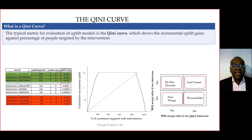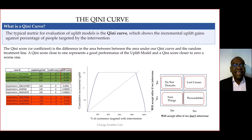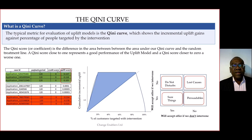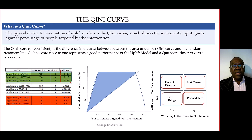The Qini curve can be summarized in a Qini score or coefficient, which is the difference in area between the straight line — the random treatment line — and the Qini curve. A Qini score close to one represents good performance of the uplift model, and a Qini score closer to zero represents worse performance.